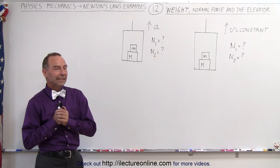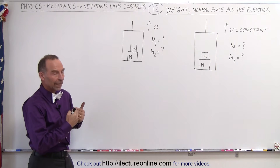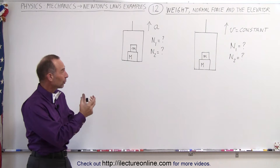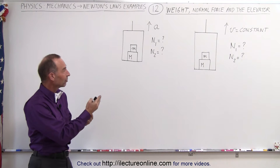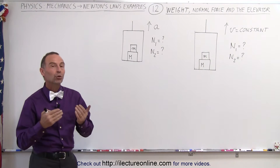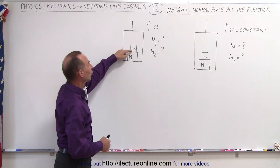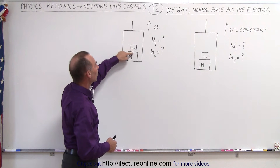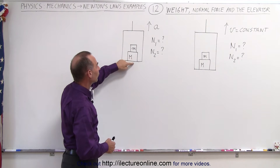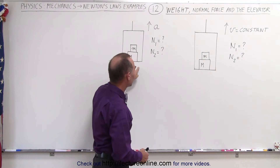Welcome to ElectronLine. In this example we're going to look at the elevator with objects within it — two masses, a small one and a large one. We're trying to find the normal forces between the small mass and the large mass, and between the large mass and the floor of the elevator in these two cases.